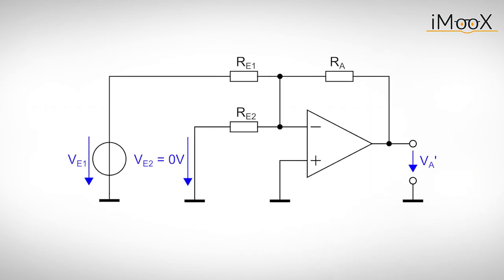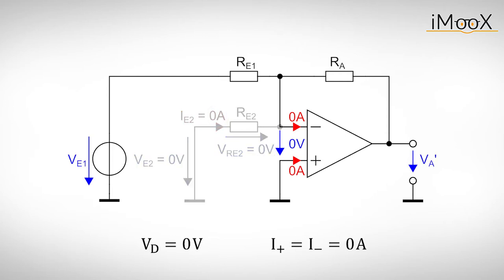But now back to our summing amplifier. We arbitrarily start with Ve1 and get this circuit. Again we apply the rules for negative feedback amplifiers. This means the voltage at the inverting input and hence the voltage over Re2 is zero volts. Consequently no current flows through Re2 and we can remove Re2 from the circuit. We end up with an inverting amplifier and can use the result from before.